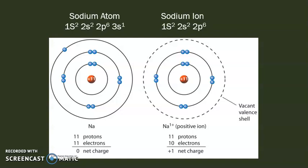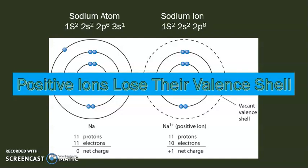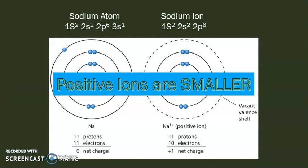Why? There's just less shells there to be dealing with. Now, this tends to be true for most positive ions as well. Since positive ions tend to lose their valence shells, you will tend to see all positive ions being smaller than their atomic counterparts.